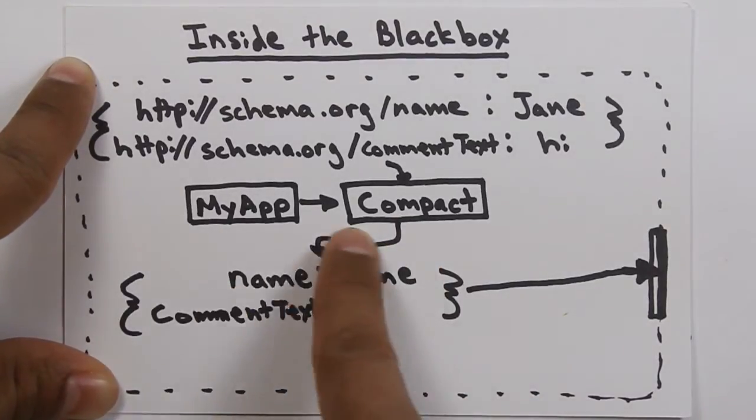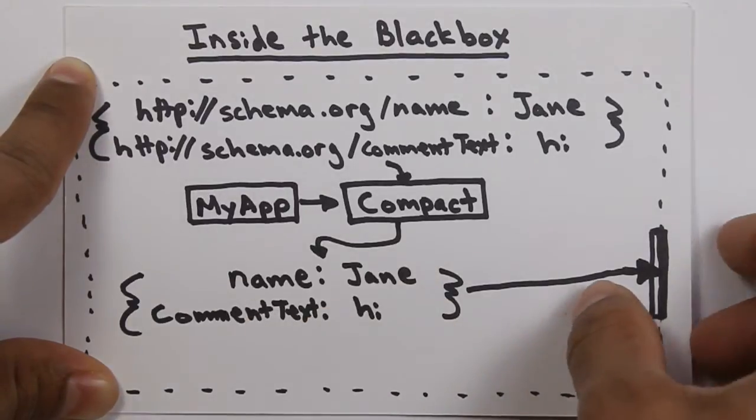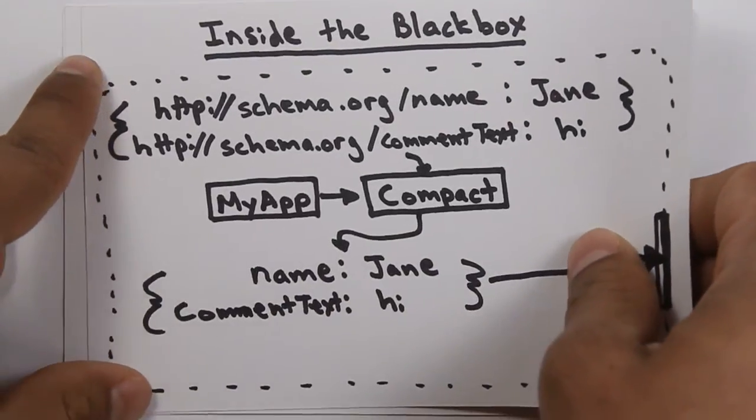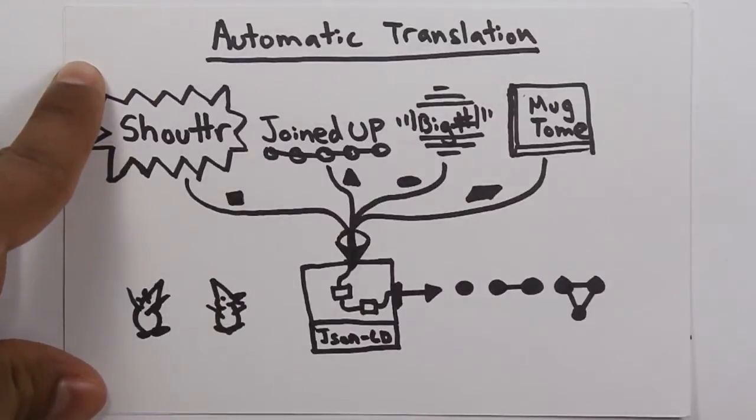And the JSON-LD compaction algorithm will output something that's really easy for a developer to use. This is what a developer wants to work with. And that's what basically comes out of the black box, is something that's very easy to use for a developer.